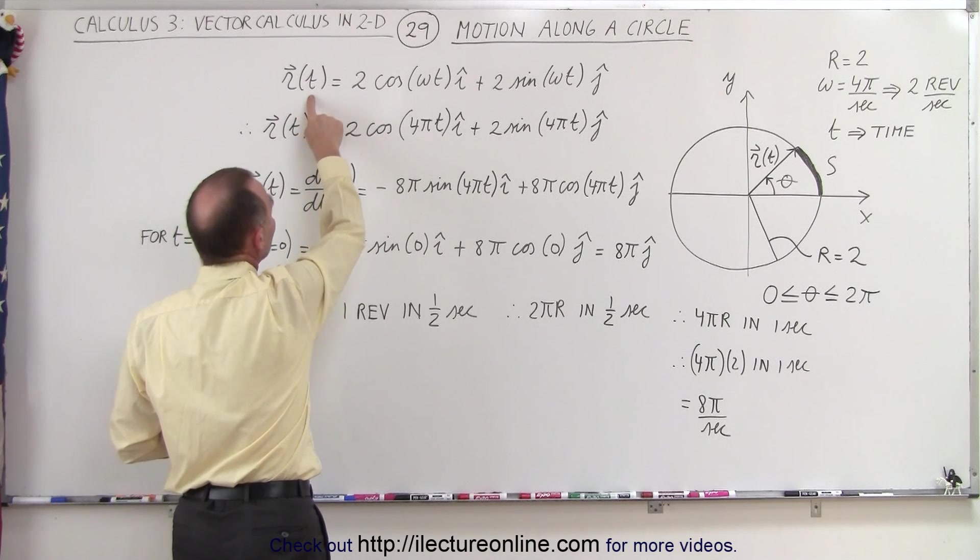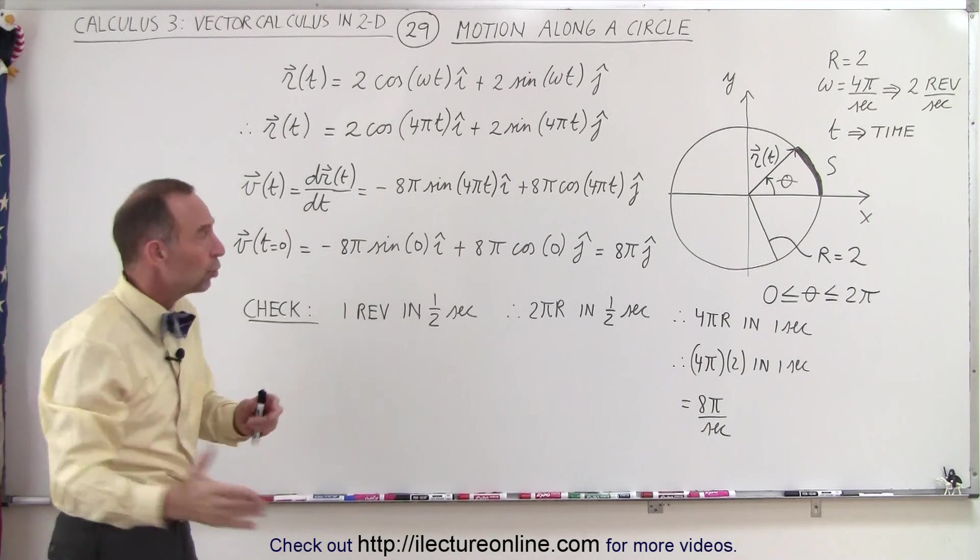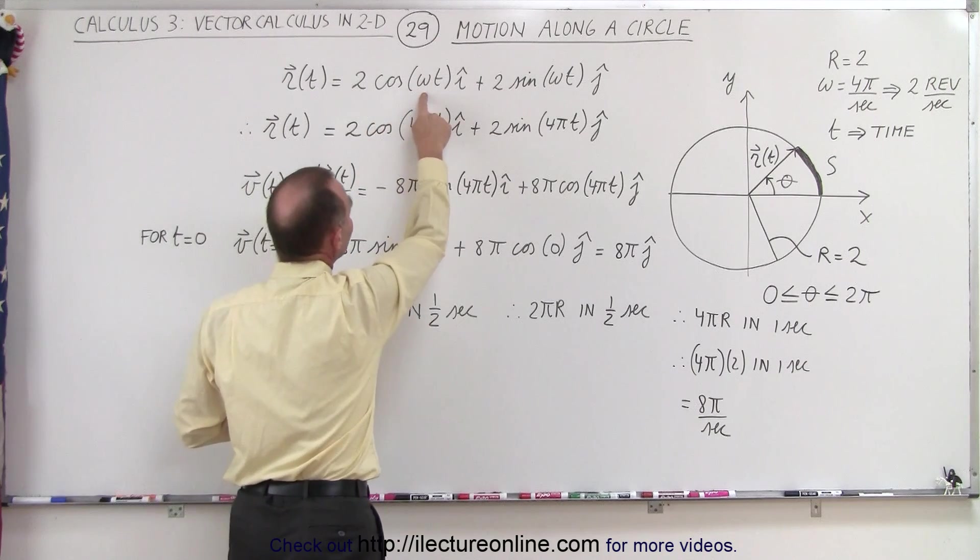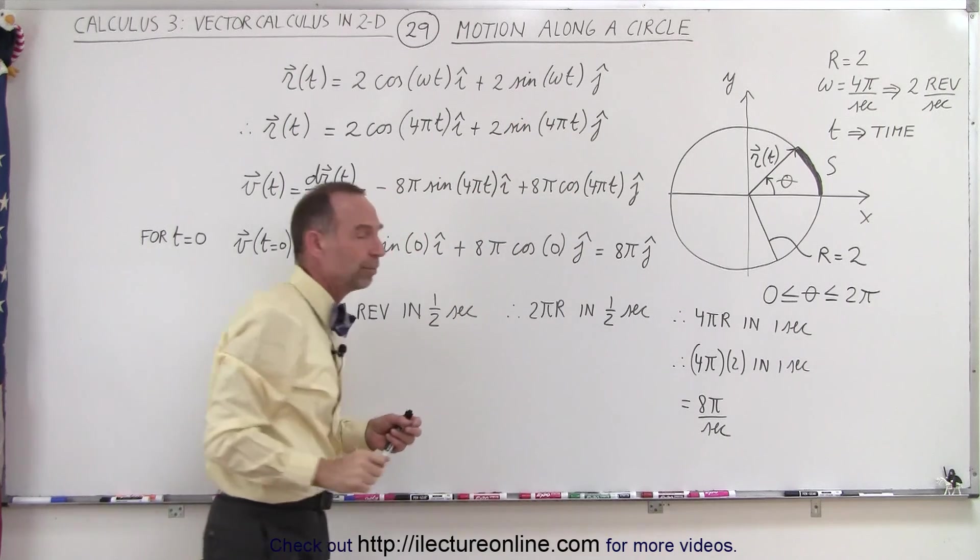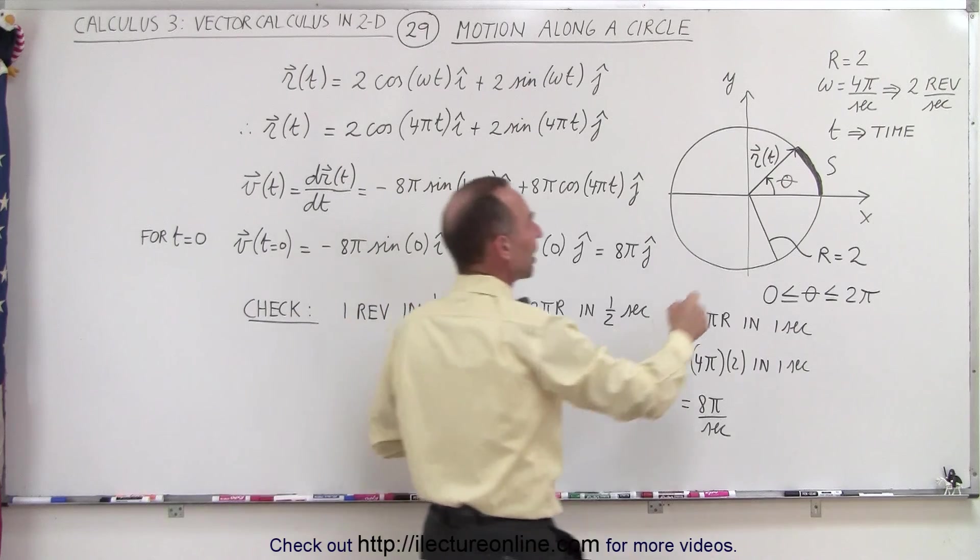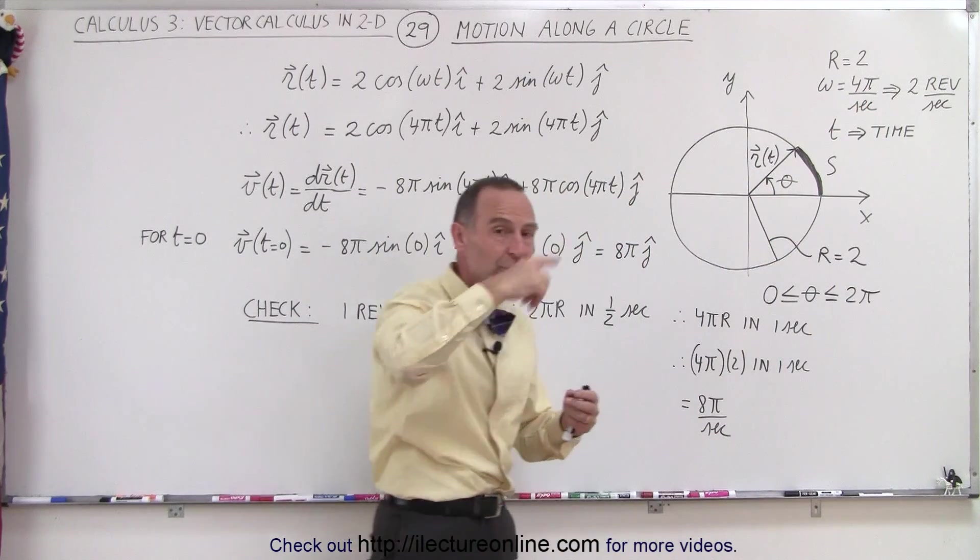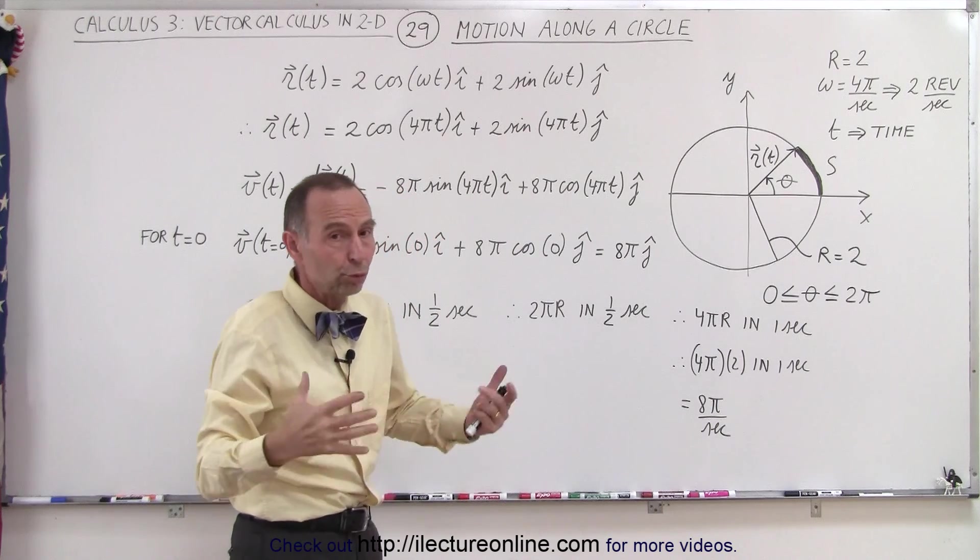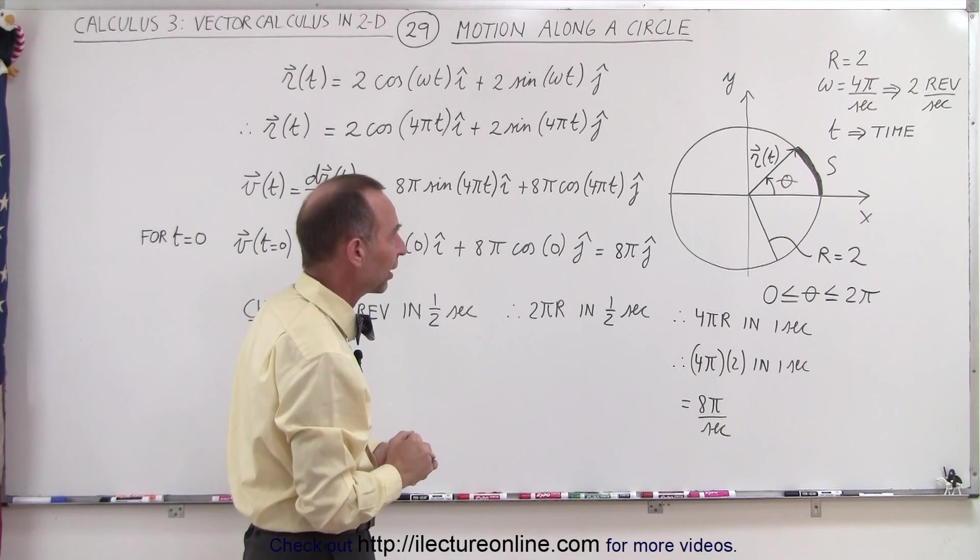The position as a function of time is going to be equal to 2, because the radius of the circle is equal to 2, times the cosine of omega t in the i direction, plus 2 times the sine of omega t in the j direction. Omega is the angular frequency. In this case the angular frequency is going to be 4 pi radians per second, which means we're traveling around the circle twice per second, 2 revolutions per second.